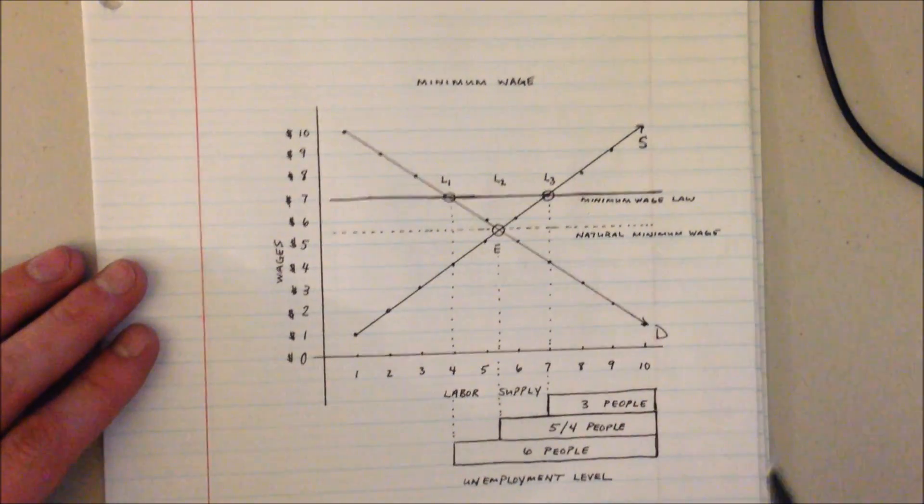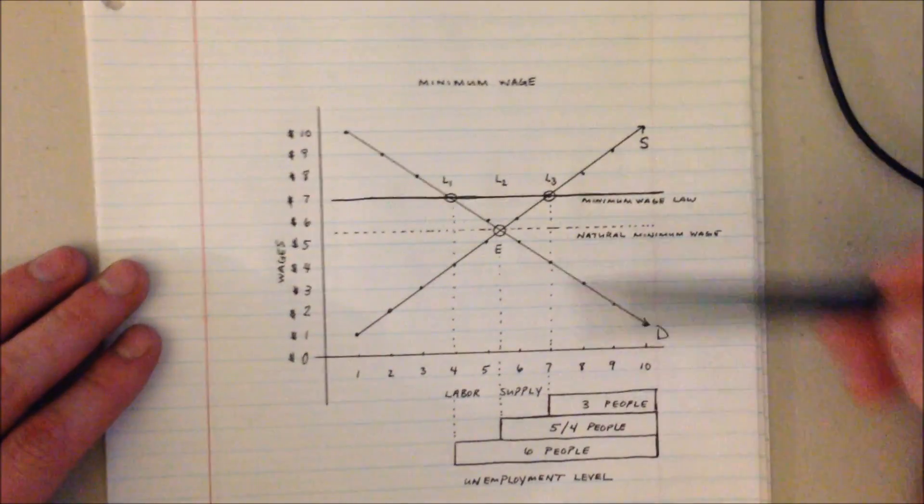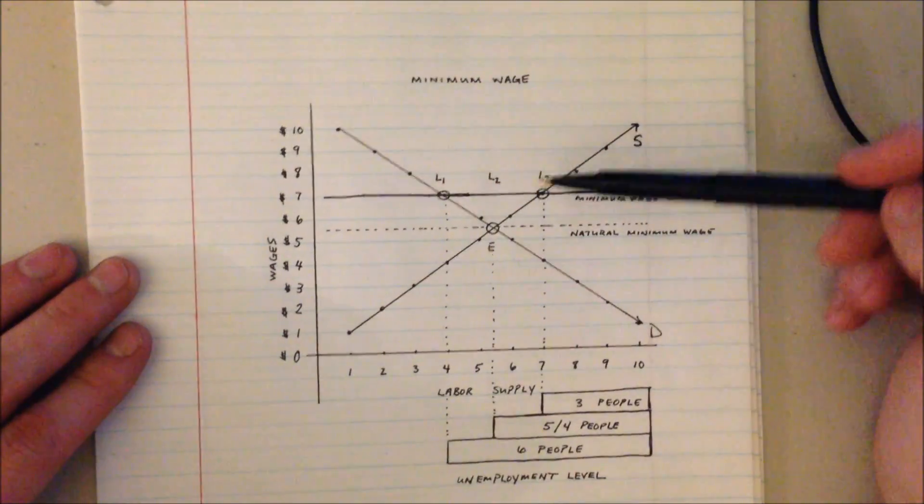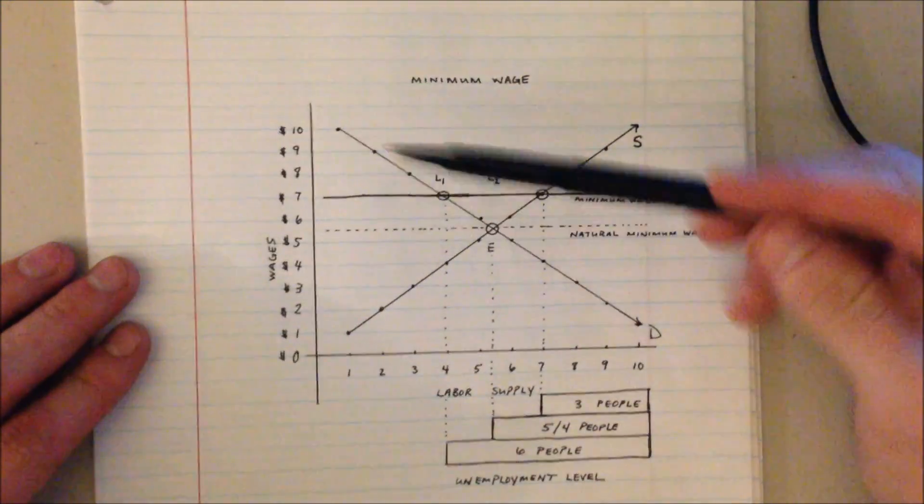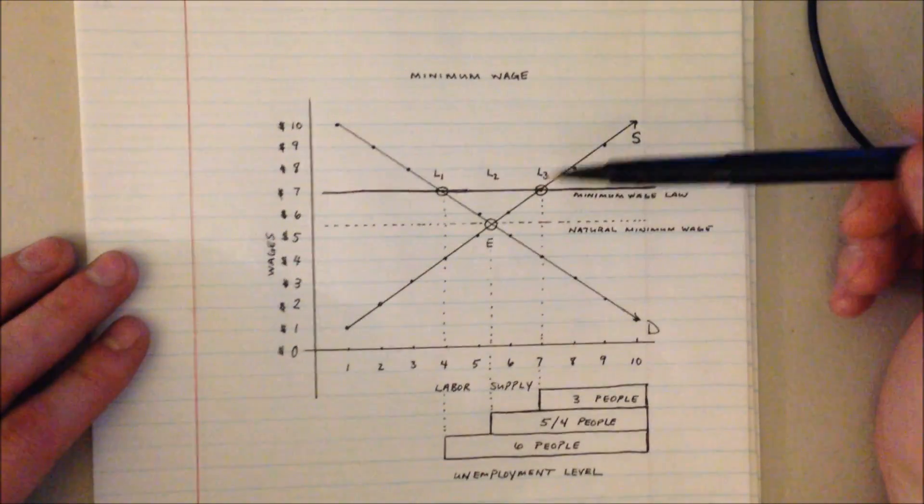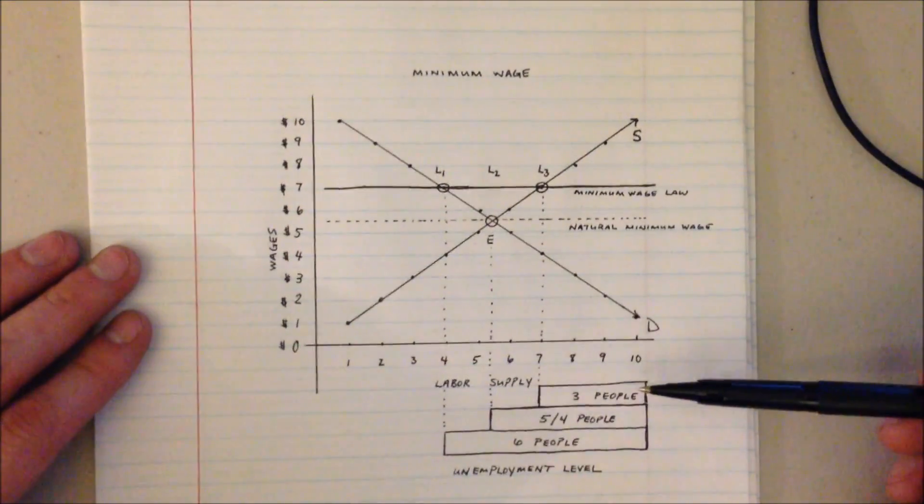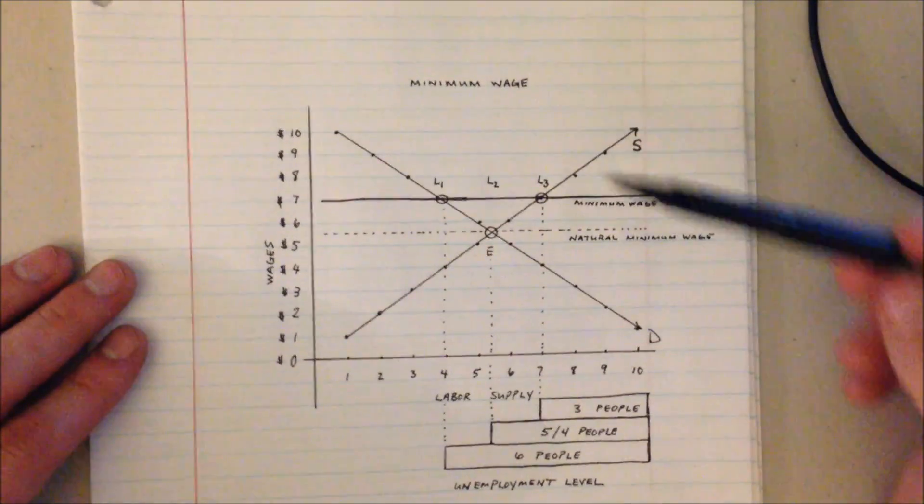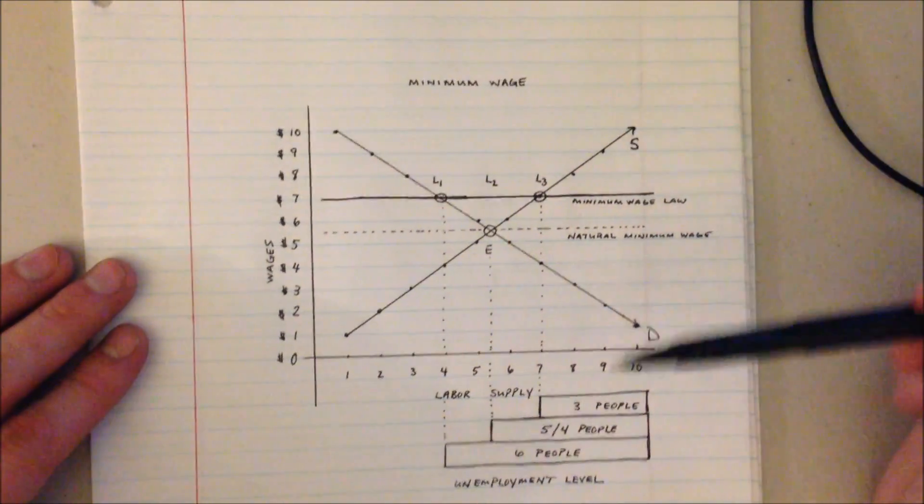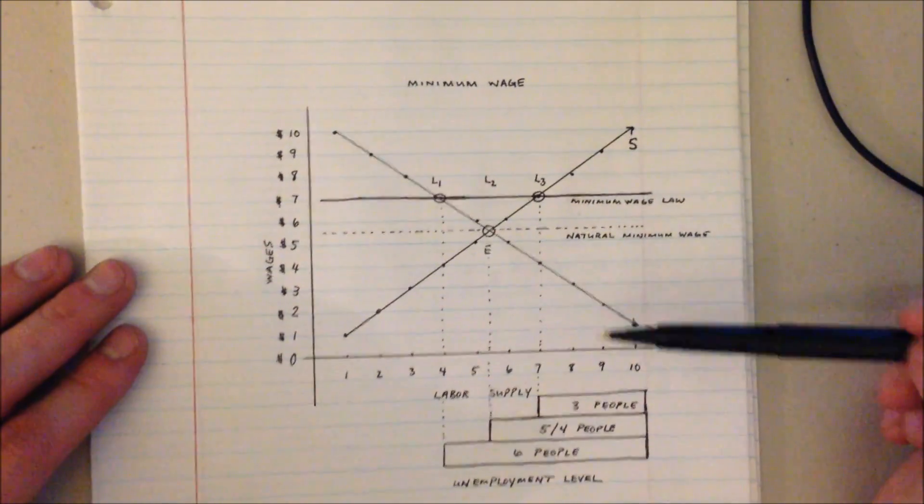We can use our model to start considering the unemployment levels at these various points. At L3 when the minimum wage is $7 and 7 people want to work, if we were to choose that we would only have 3 people unemployed. Only 3 people would say I want more money than $7 and would choose to remain unemployed.